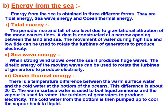Energy from the sea is obtained in three different forms: tidal energy, sea wave energy, and ocean thermal energy. Tidal energy: the periodic rise and fall of sea level due to the gravitational attraction of the moon causes tides. A dam is constructed at a narrow opening between land and sea. The movement of water during high and low tides can be used to rotate the turbine of a generator to produce electricity.